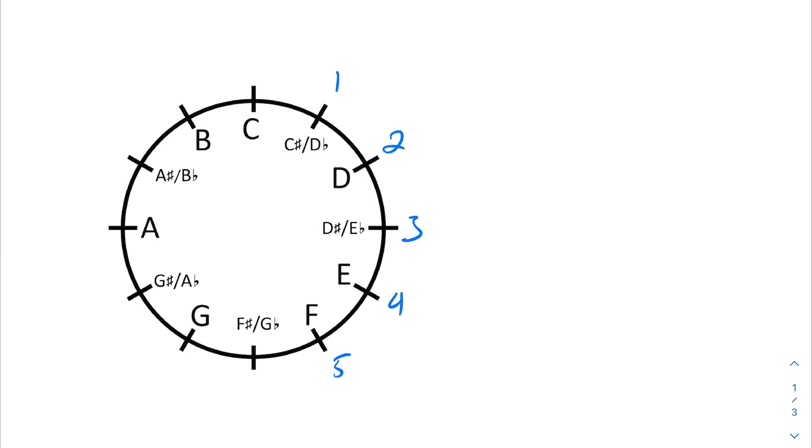So we have what's here is known as the clock face. We have all 12 chromatic pitches that we could have within an octave, and you can see it looks just like a regular clock. All 12 moments that we can have in a normal clock. If you can read a normal clock, you could read this quite easily.